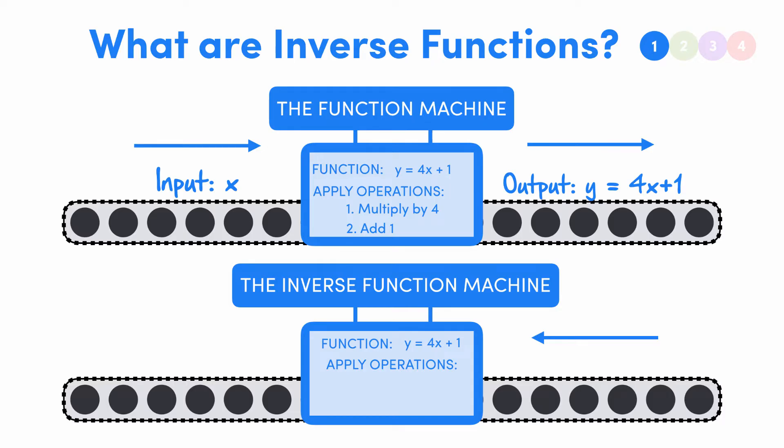Instead of multiplying by 4 and then adding 1, it would firstly subtract 1 and then divide by 4. So our output of y would be given by x minus 1 over 4.